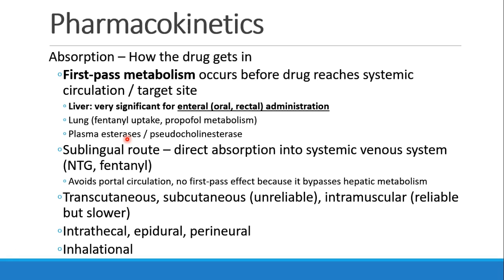There are many routes of administration beyond IV and intramuscular, and oral and rectal. The sublingual route places drug under the tongue to be absorbed through the oral mucosa; it goes directly into the venous system — as seen with nitroglycerin or fentanyl — and since it enters the superior vena cava, it avoids the liver and portal circulation, so there's no hepatic first-pass effect. Other routes include transcutaneous (through the skin), subcutaneous (injected under the skin), intramuscular (slightly slower than IV but reliable), intrathecal (into the CSF), epidural (around the spinal cord), nerve blocks, and of course inhaled drugs.